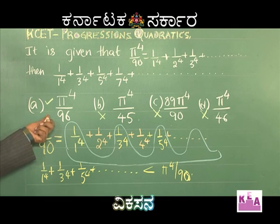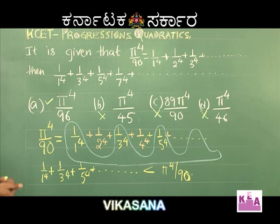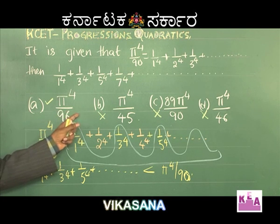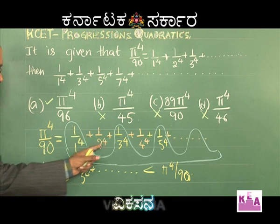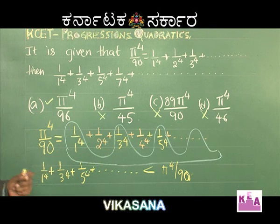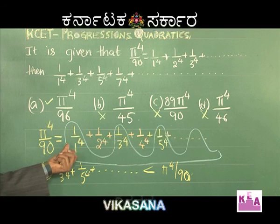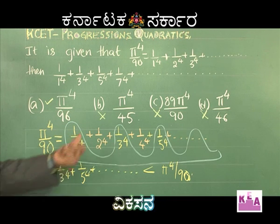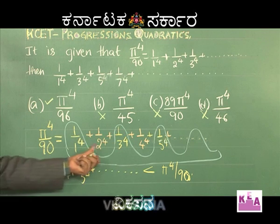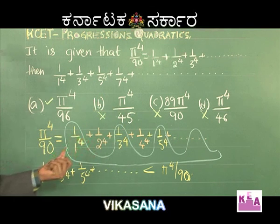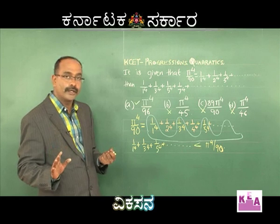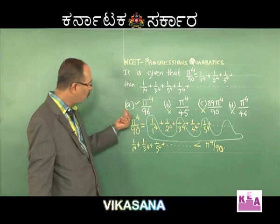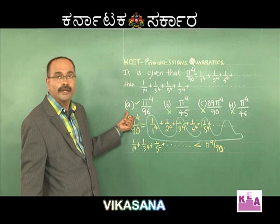You won't always be lucky enough to solve this way. If multiple options are less than π⁴/90, you would separate 1/2⁴ + 1/4⁴ + ..., take 1/2⁴ as a common factor, and you'll get back an expression like π⁴/90 which you can simplify. But this is a very simple problem. Option A is correct.